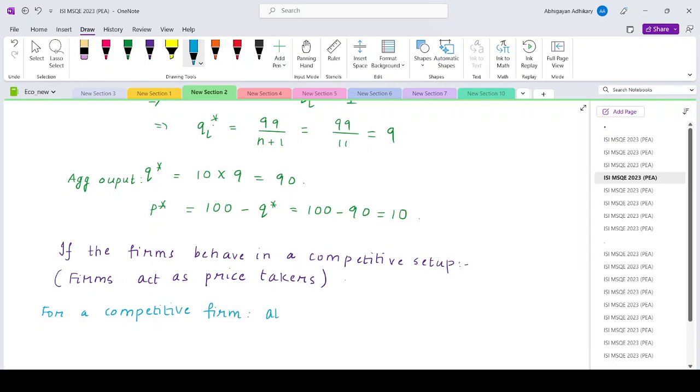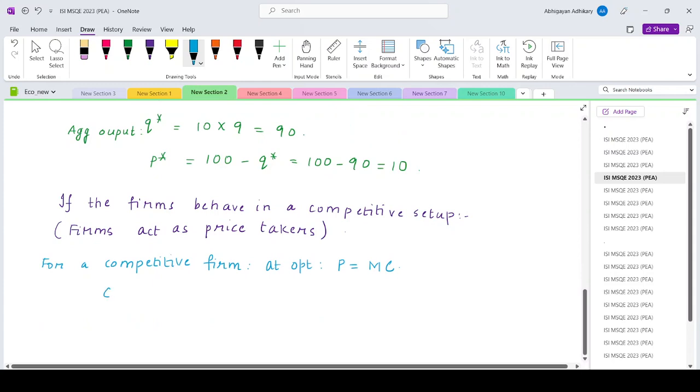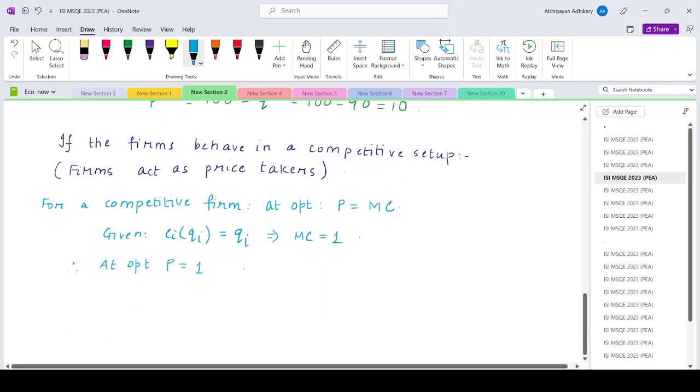We have price equals marginal cost. In this case, what are we given? The cost function ci of qi equals small qi, so the marginal cost is basically 1. That means at optimal, p will be equals to 1. So if p equals 1, what would be the competitive market output?